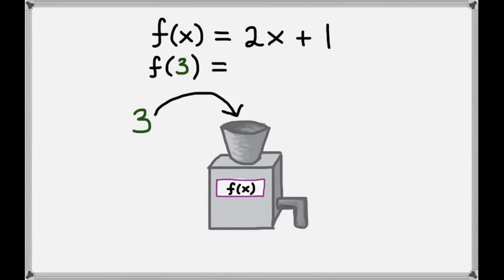Here's what we mean by that. f(3) is going to be 2 times, so we have an x here, we're going to replace it with a 3. So we have 2 times 3 plus 1. And that equals 6 plus 1 which is 7.